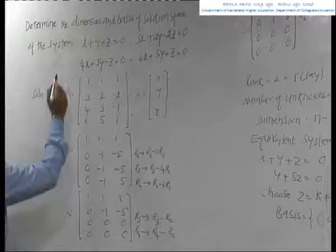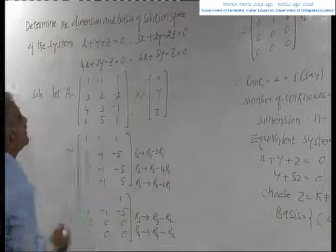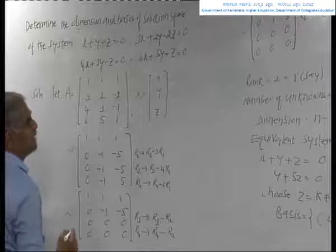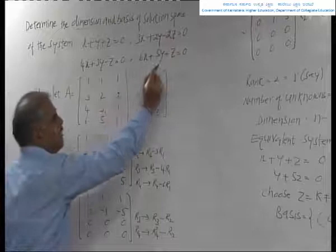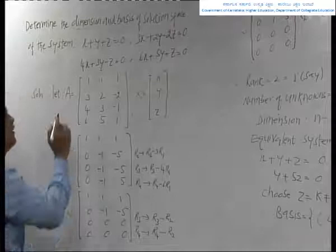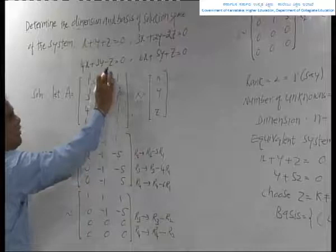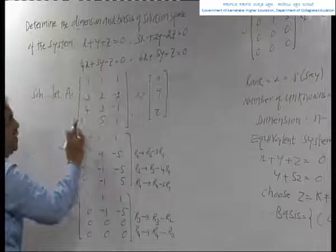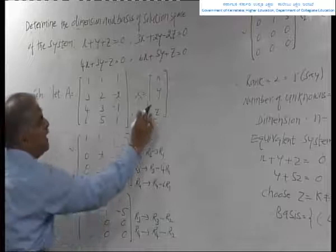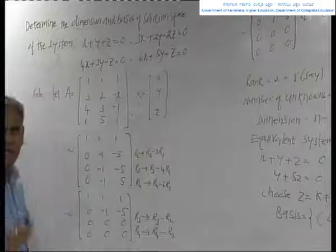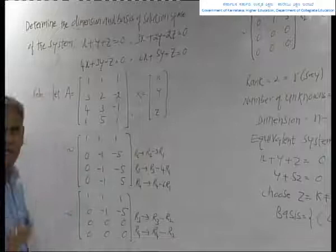We will see one more type of example: determine the dimension and the basis of the solution space of the system — x plus y plus z equal to 0, the second equation, the third equation 4x plus 3y minus z equal to 0, and 6x plus 5y plus z equal to 0. We form the coefficient matrix with coefficients of x in the first column, y in the second column, and z in the third column, and reduce to echelon form using elementary row operations.